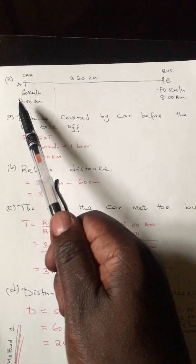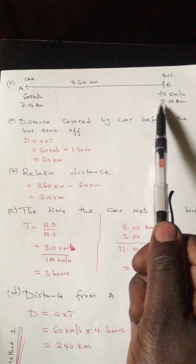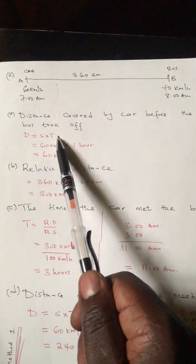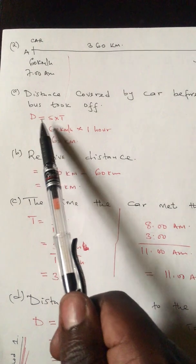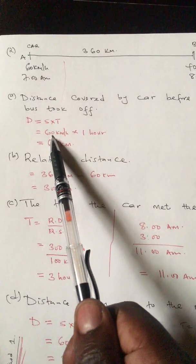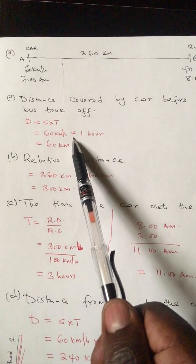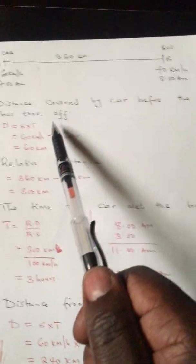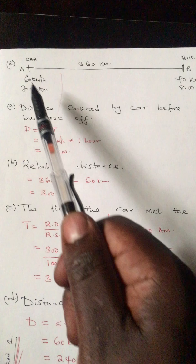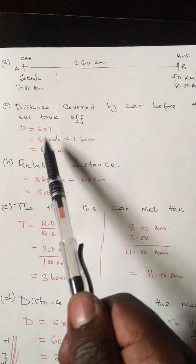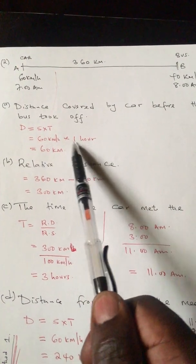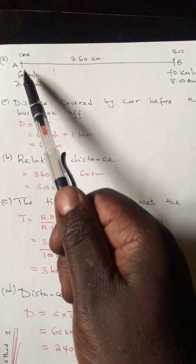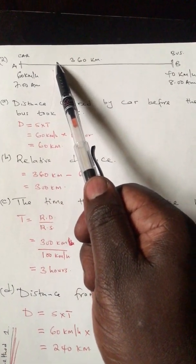First, we want to find the distance covered by the car before the bus took off. The car left early and the bus left later, so it covered some distance before the bus took off. From the basic formula, distance equals speed times time. The car's speed is 60 km/h. The time it traveled before the bus departed is the difference between 8 and 7, which is 1 hour. So distance equals 60 times 1, giving 60 kilometers.